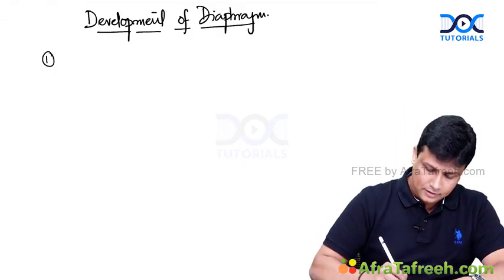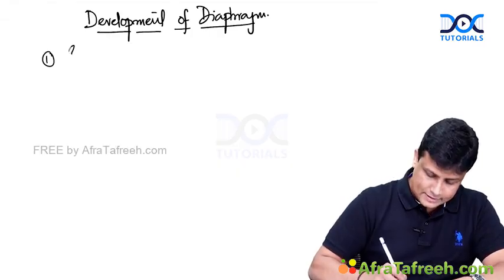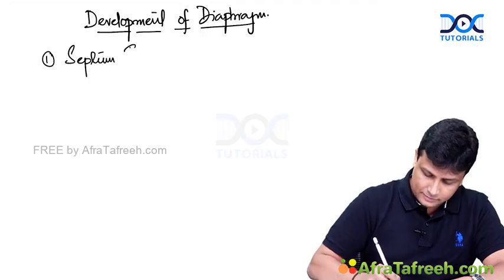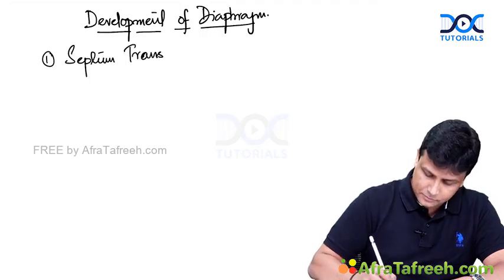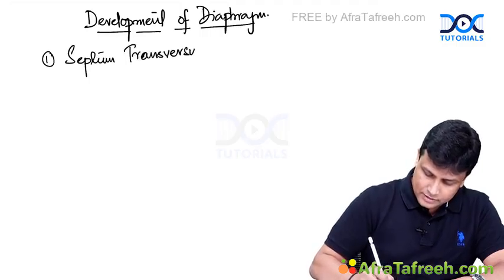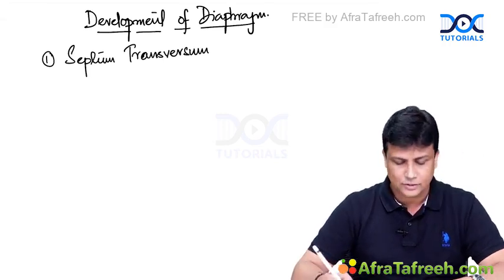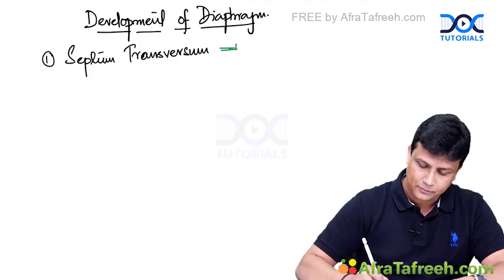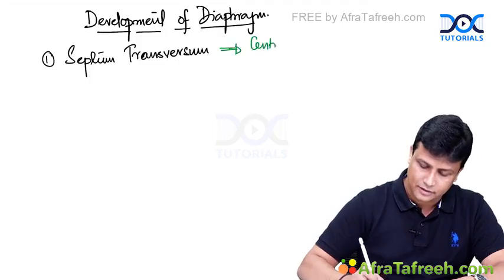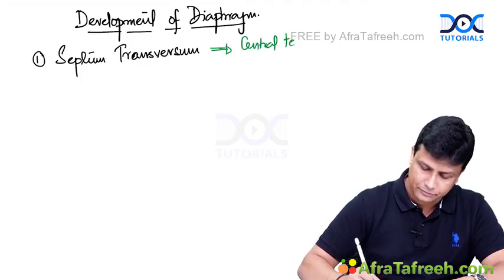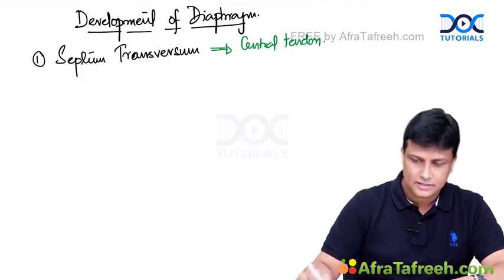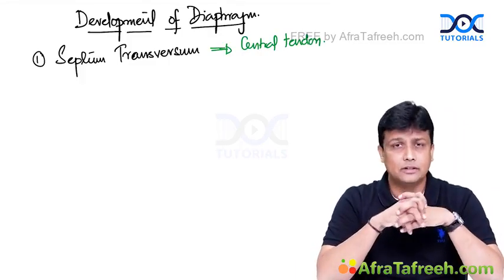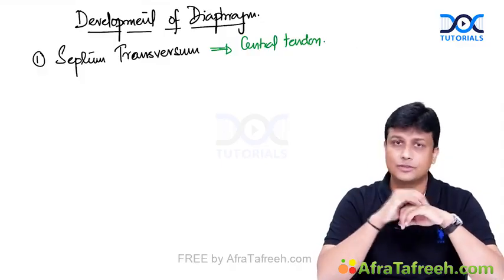Number one, diaphragm will be developing from your septum transversum. Septum transversum is the one which is going to form the central tendon of the diaphragm. If you recall, we have discussed about the septum transversum in detail during the general embryology, third week of general embryology.